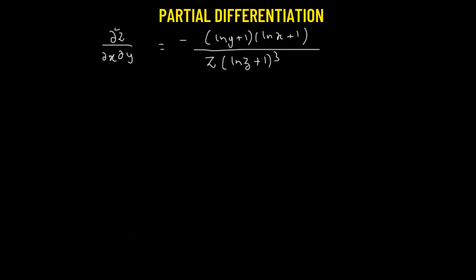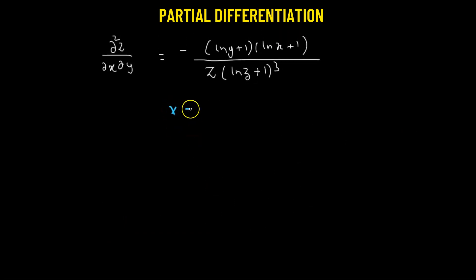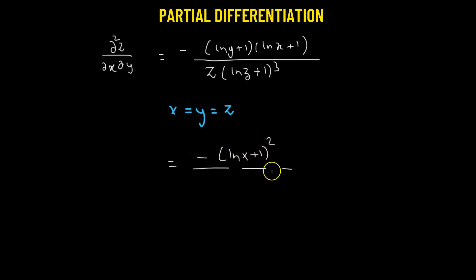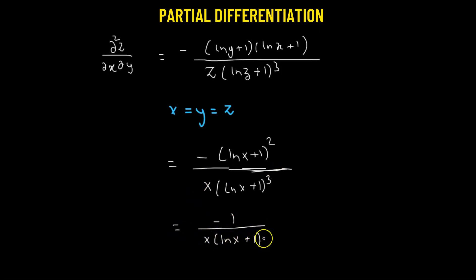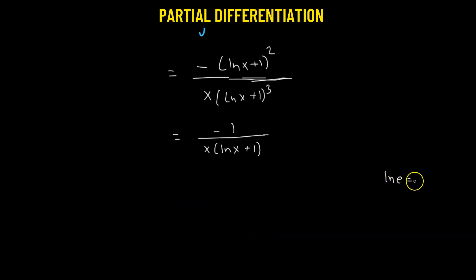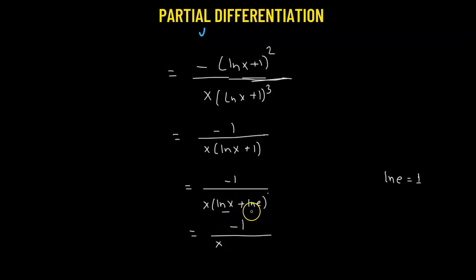Now substituting x = y = z, the expression becomes -(log x + 1)² divided by x · (log x + 1)³, which simplifies to -1/(x · (log x + 1)). Since the natural log of e is 1, we write (log x + 1) as (log x + log e), and using the logarithm property this becomes log(ex). Therefore the second partial derivative equals -1/(x · log(ex)), which is what we were asked to prove.